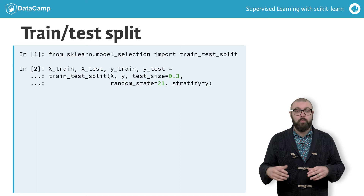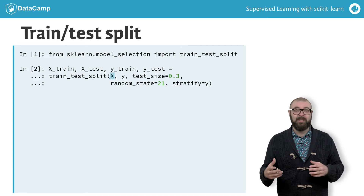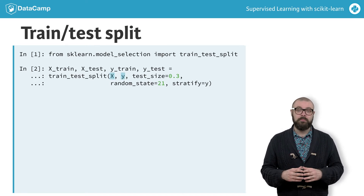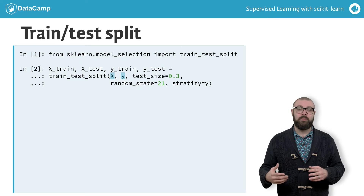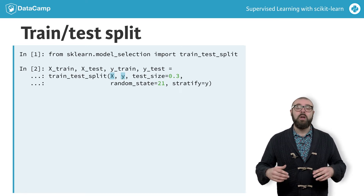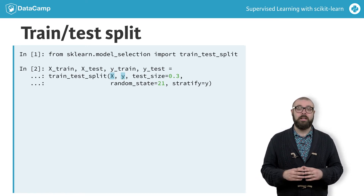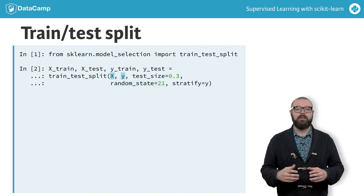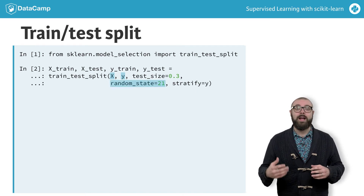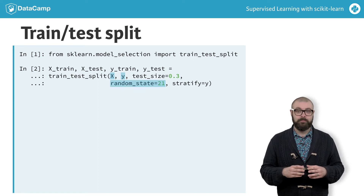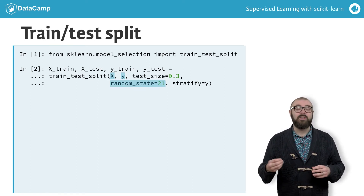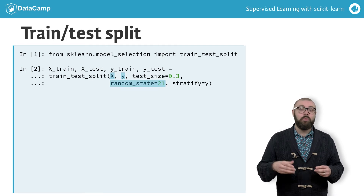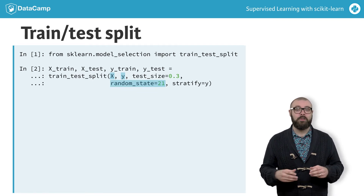The first argument will be the feature data; the second, the targets or labels. The test_size keyword argument specifies what proportion of the original data is used for the test set. Lastly, the random_state argument sets a seed for the random number generator that splits the data into train and test. Setting the seed with the same argument later will allow you to reproduce the exact split and your downstream results.